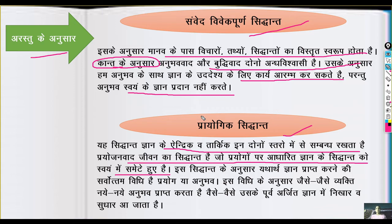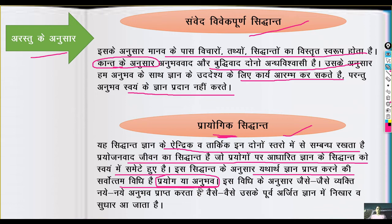उस तरीके का ज्ञान जो होता है वो हमारा प्रायोगिक ज्ञान होता है और थियोरी क्या है — प्रायोगिक सिद्धान्त। ये ऐन्द्रिक भी है और दोनों के मेल से ये चीज़ ग्रहण की जाती है। इस सिद्धान्त के अनुसार ज्ञान प्राप्त करने की सर्वोत्तम विधि प्रयोग या अनुभव है। Any knowledge — to find it, you need to use this way. This is called the Prayogic Siddhant.